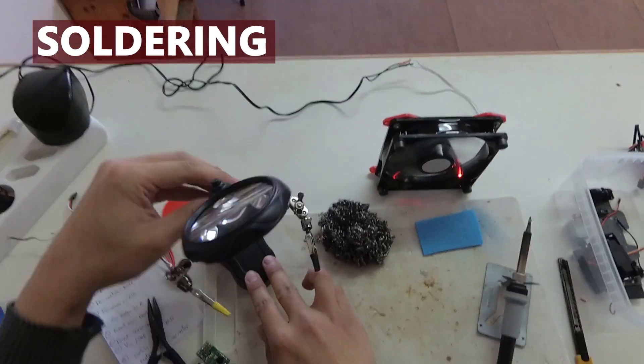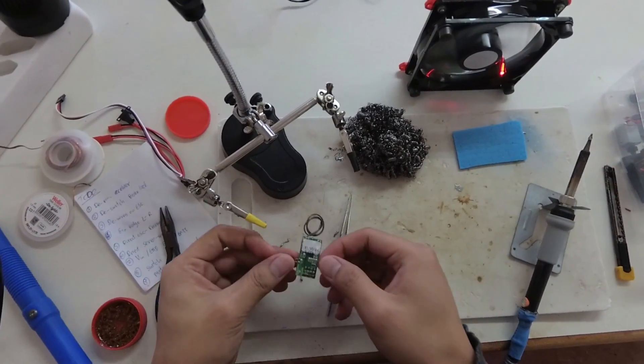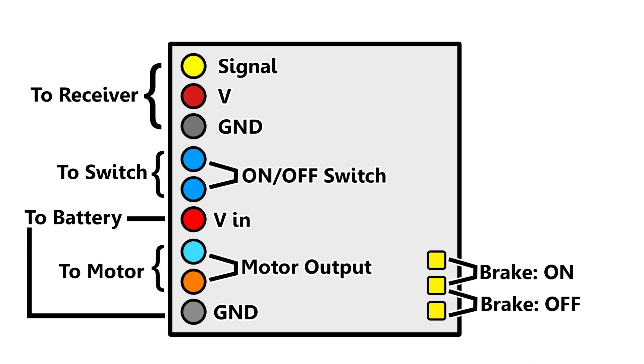Now everything is ready for soldering. But before that, you should take note what each pin is connected to so you can do the soldering without making any mistake. Here is what I use for this ESC.